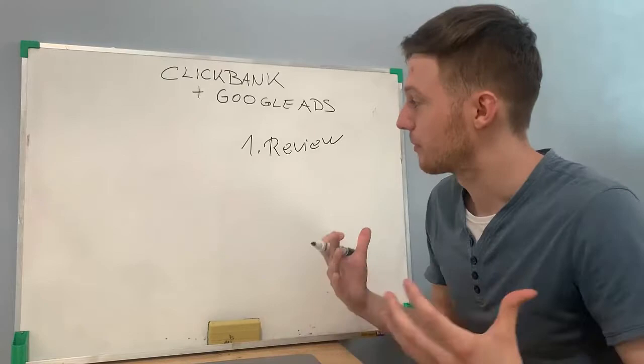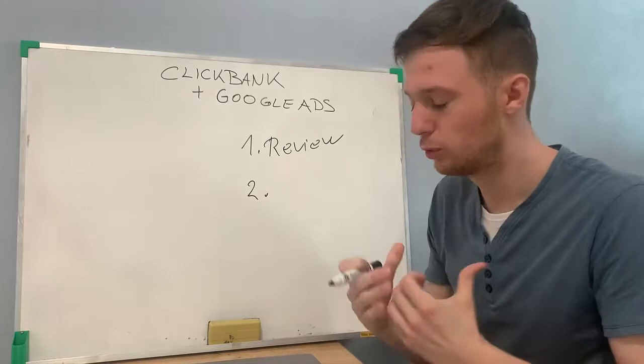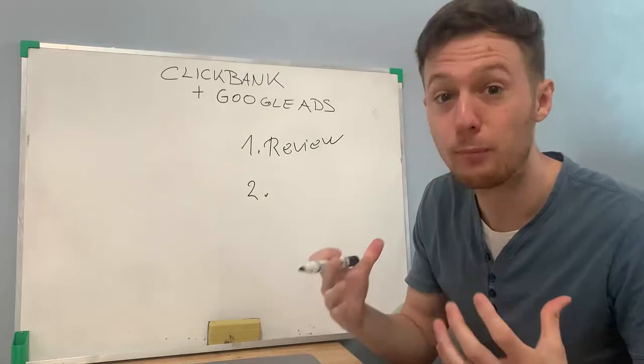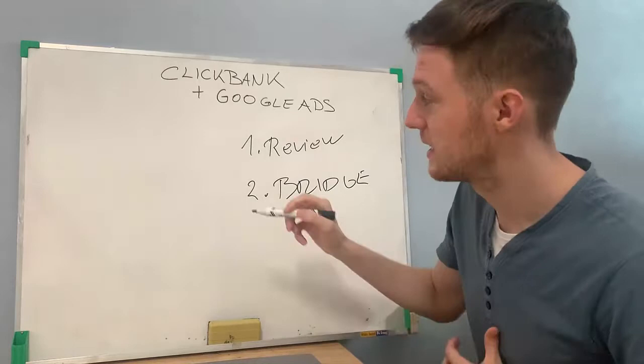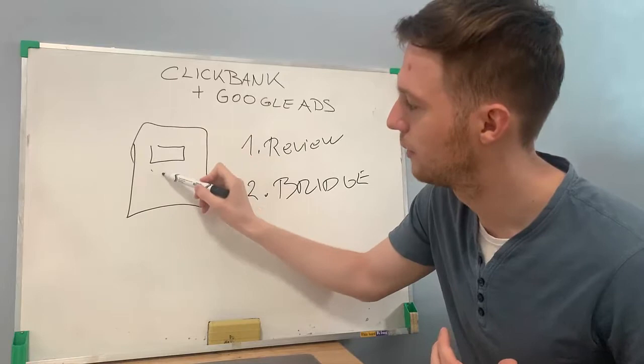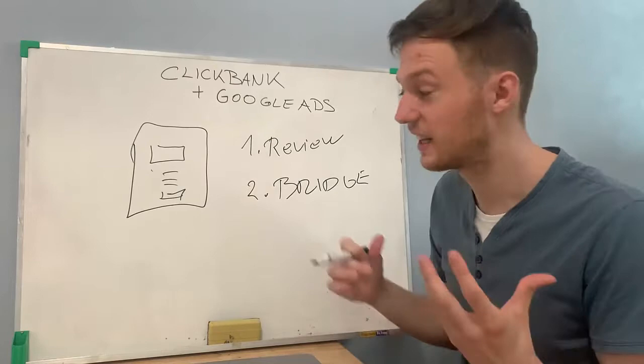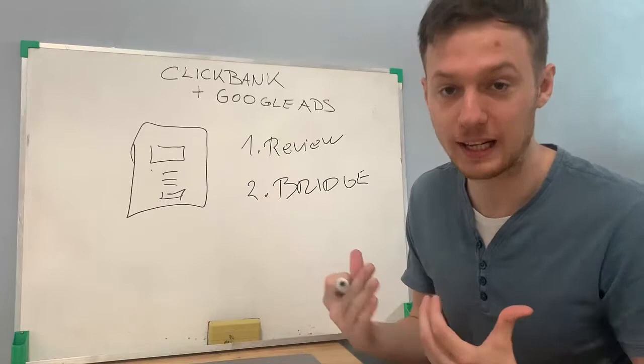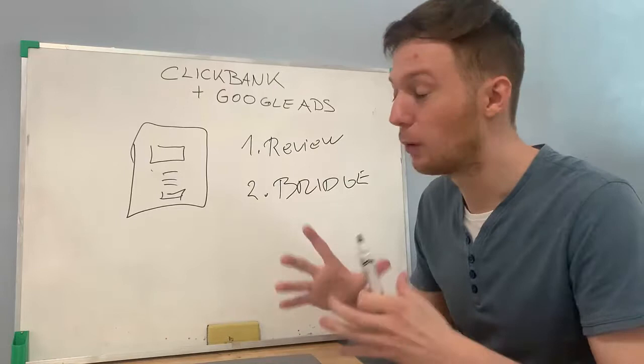A lot of people are doing review sites — I've been doing this too — but basically you build a review site of the product you're going to promote and then you go to Google and create a search ad reviewing that product. Number two is to build a basic click-through or bridge page. A bridge page is a one-page website where you can have a picture of the product, some information, and a button linking to that product — it's almost like direct linking, just with a website in between because on Google Ads you cannot direct link the product.